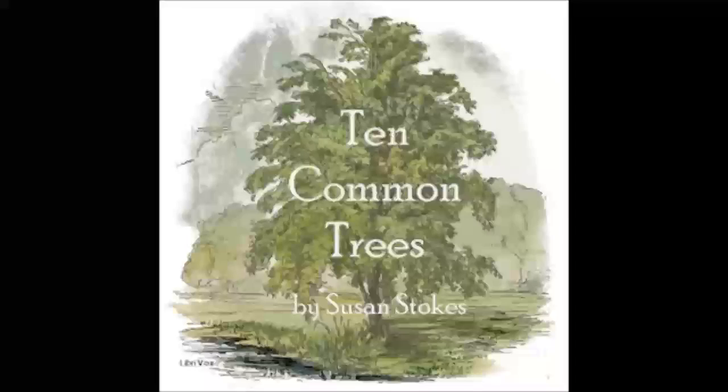A tiny gall gnat sometimes stings the ends of the twigs and stems of willows. This causes them to swell, and the buds, instead of growing into twigs, form leafy cones which might be mistaken for the fruit. The young of the gnat develop in these cones. The shoots of many willows are grown for basket work. They are planted close, and when they have grown tall and slim, they are cut. The bark is then stripped off, and the wood is used in the making of baskets and chairs.